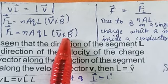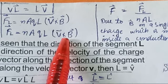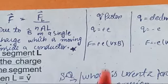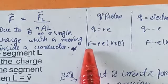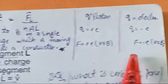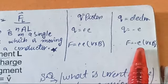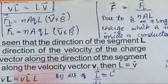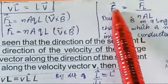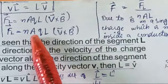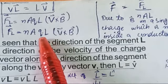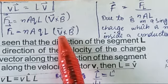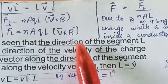This expression Q·V×B is the force experienced by a single charge, whether it is a proton or an electron. In case of a proton, F = +e·V×B, while in case of an electron, F = −e·V×B. So the force on a charge is F = Q·V×B.